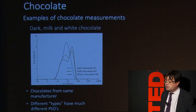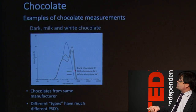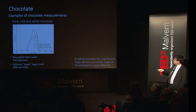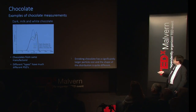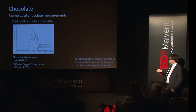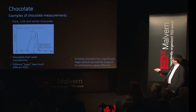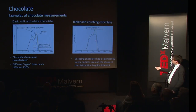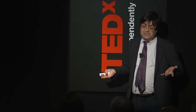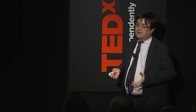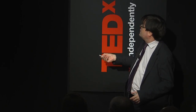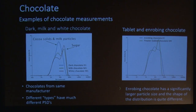If we take dark chocolate, white chocolate, and milk chocolate and look at the size distributions, there are quite big differences. The large peak is likely sugar, and the smaller ones are milk solids, cocoa solids, and cocoa butter. This is from the same manufacturer but three different kinds of chocolates. We can also look at enrobing chocolate — the kind that goes around a soft center like fondant cream — or chocolate powder, which again have quite different particle sizes, so the taste and mouthfeel are completely different.